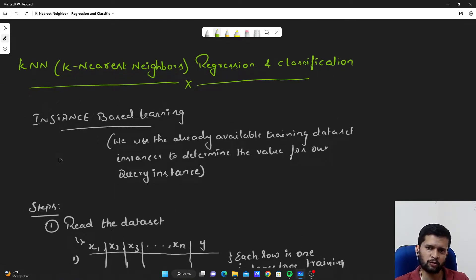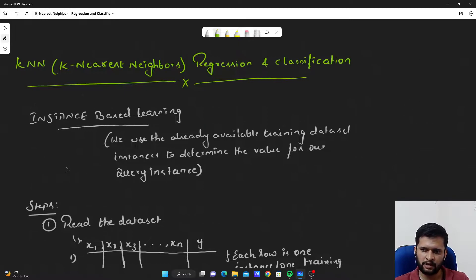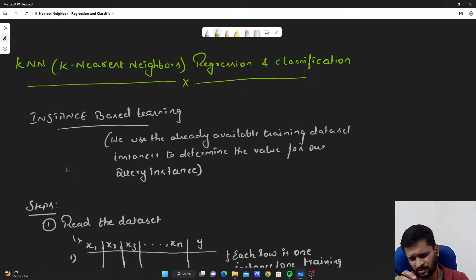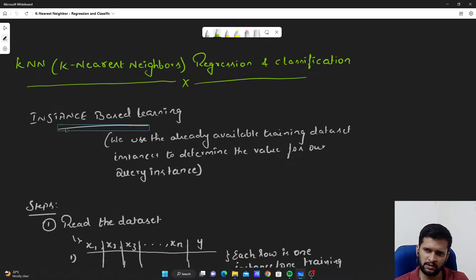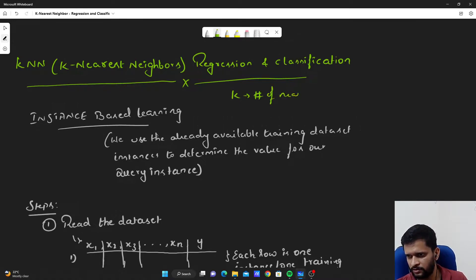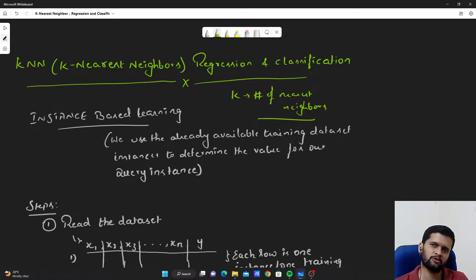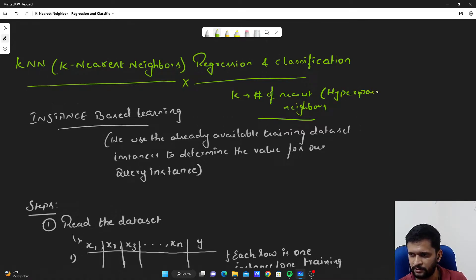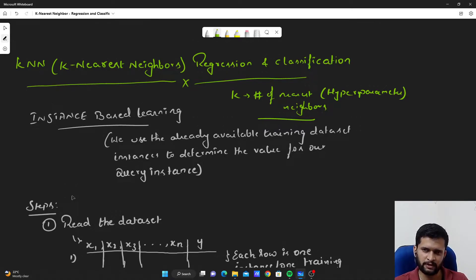K Nearest Neighbor is also called instance-based learning. When we say instance-based learning, we make use of the already available dataset or training examples to determine the value of our query instance. This may sound like how all supervised machine learning algorithms work, but here the only thing we have to optimize is the value K. K stands for the number of nearest neighbors. Apart from this there are no parameters to learn, so K can be treated as a hyperparameter.